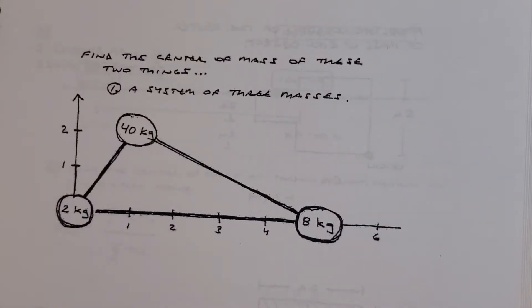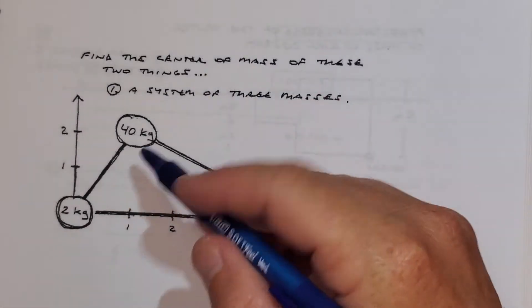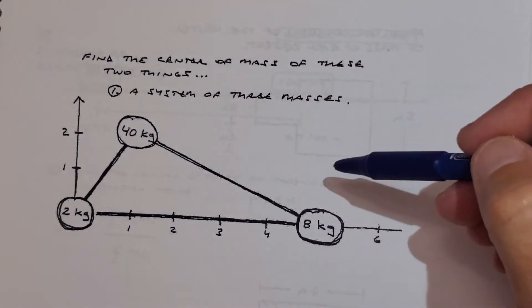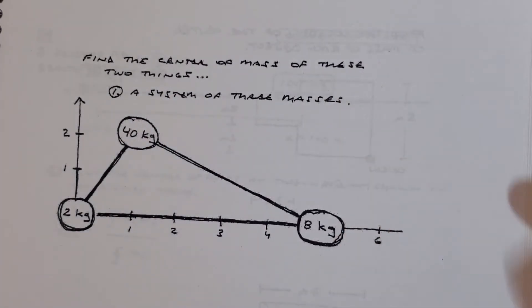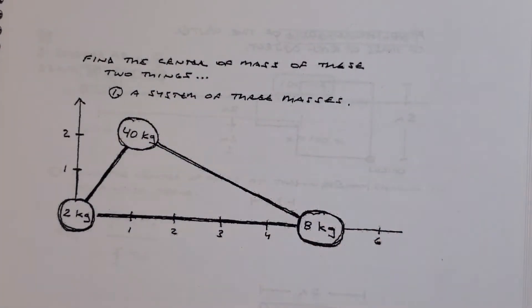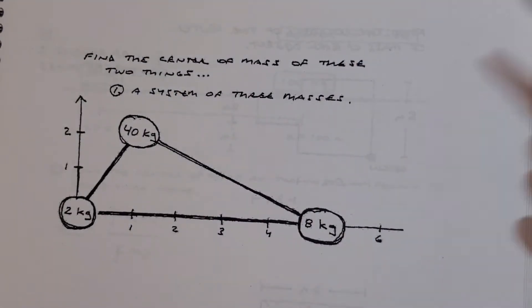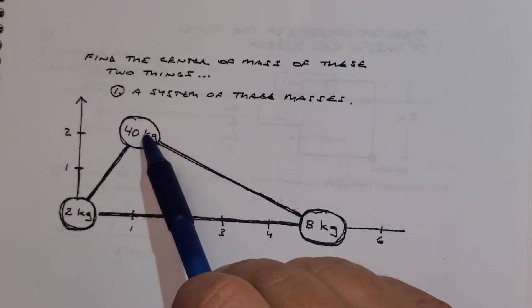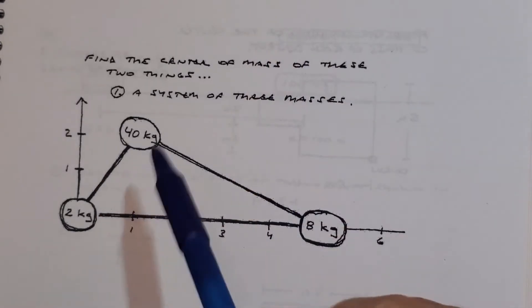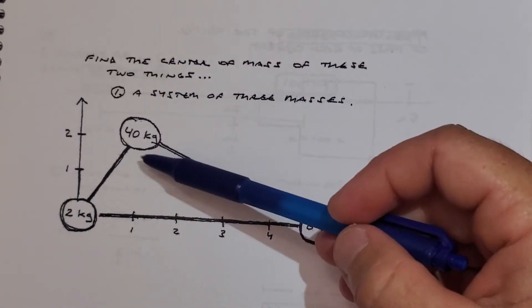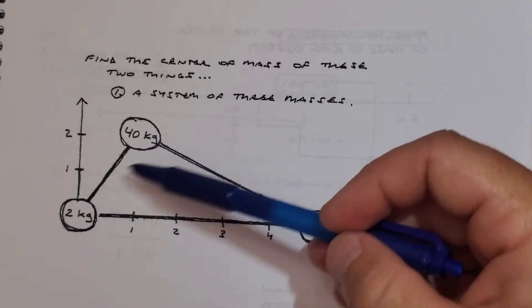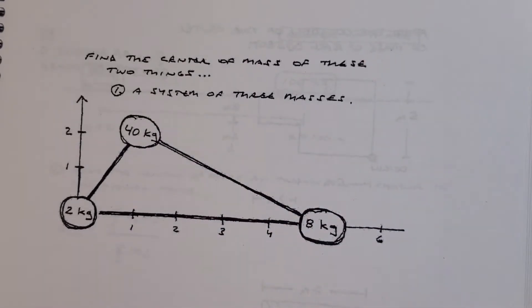Here we're finding the center of mass of a system that is more two-dimensional, as opposed to just being along the x-axis. A thing to remember conceptually before you start is that if you were to just throw this whole mass into the air, it would rotate around the center of mass. This 40-kilo object is so much heavier than the others that you know the center of mass is going to be pretty close to the 40-kilo thing — way up nearby. So that helps you get your mind set before you start.